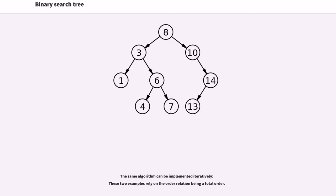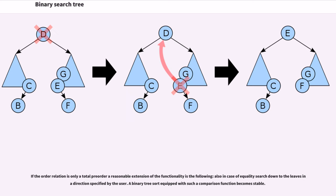The same algorithm can be implemented iteratively. These two examples rely on the order relation being a total order. If the order relation is only a total pre-order, a reasonable extension of the functionality is the following: also in case of equality, search down to the leaves in a direction specified by the user. A binary tree sort equipped with such a comparison function becomes stable.